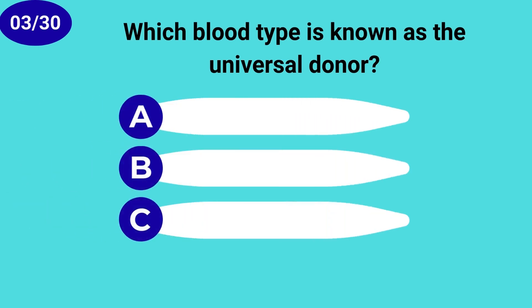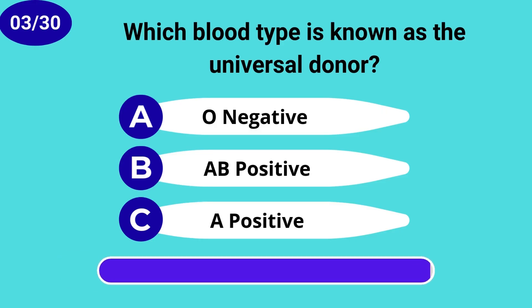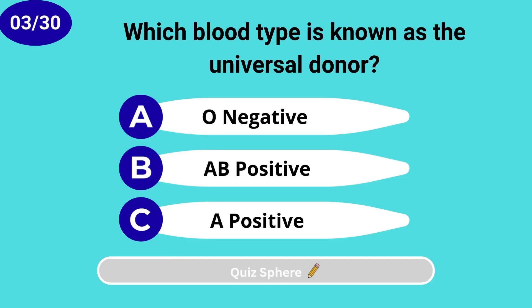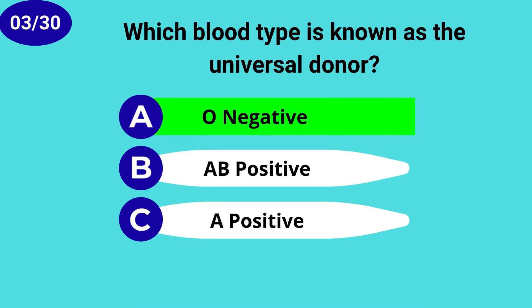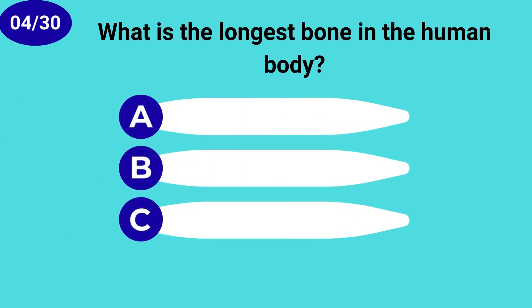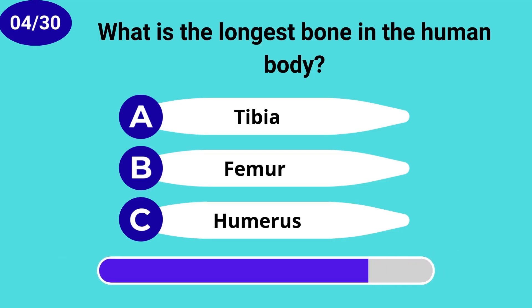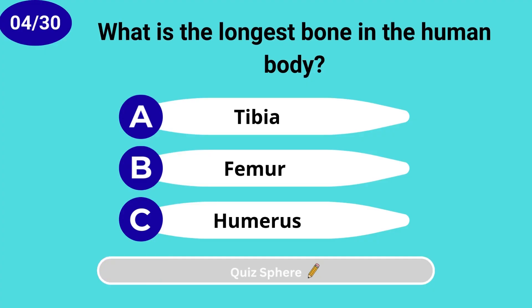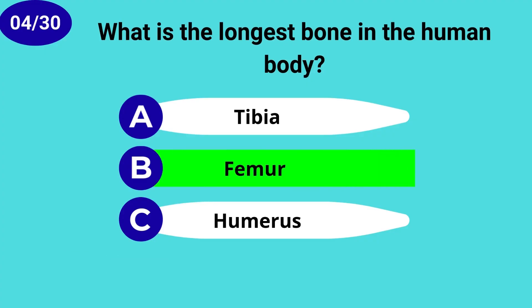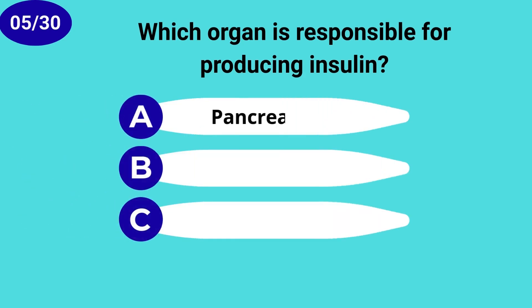Which blood type is known as the universal donor? O-. What is the longest bone in the human body? Femur. Which organ is responsible for producing insulin?